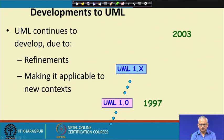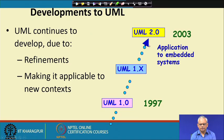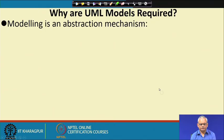UML 1.0 was released in 1997 as a unification of various methodologies that existed. It continued to evolve until UML 2.0 was released in 2003, and even now it continues to evolve further.